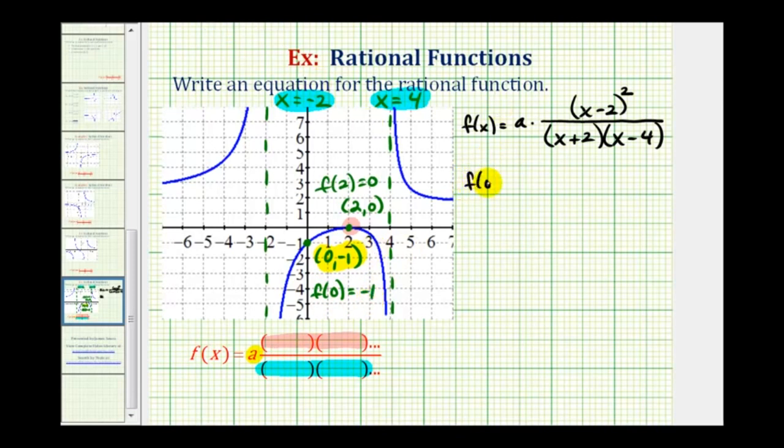Okay, so f(0) would be a times, again if x is 0, this would be (-2) squared. The denominator is going to be positive 2 times negative 4, and this must equal negative 1. So we'll have positive 4 over negative 8, that's negative 1/2. So we have negative 1/2 a equals negative 1.